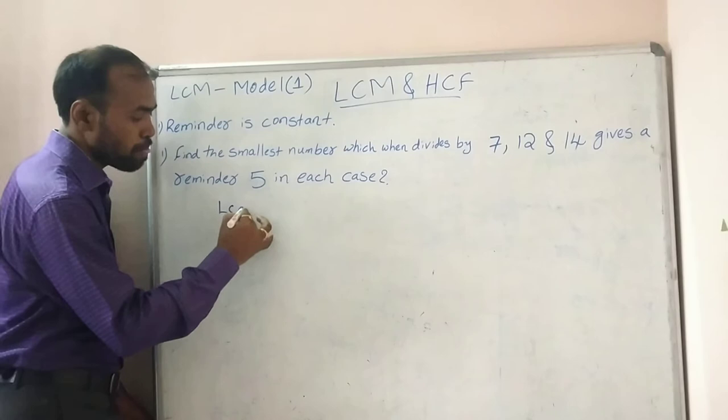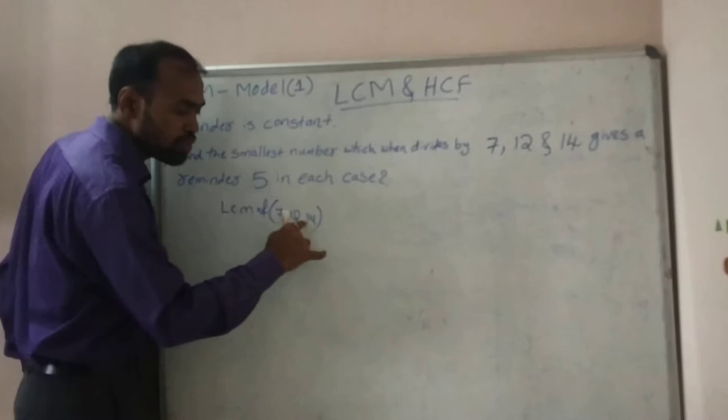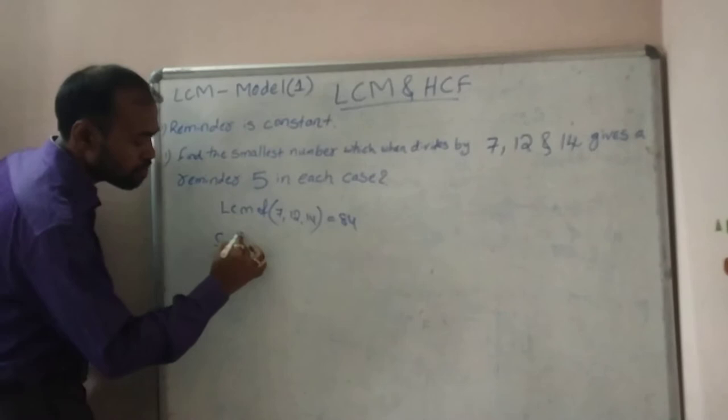First of all, find out the LCM of 7, 12, and 14. The LCM of 7, 12, and 14 is 84.